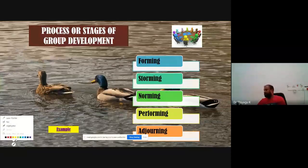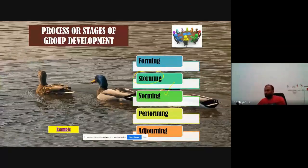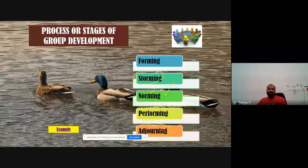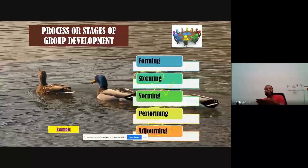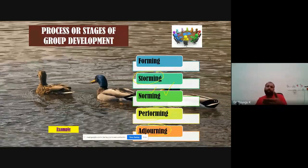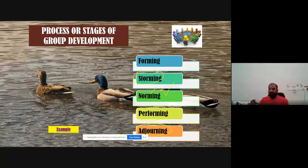In the norming stage, the storming issues reduce. Now you realize the exact nature of your work, what is assigned to you, what you are going to do — you fix your norms. Then finally you are performing to reach your target. Once all four semesters are over, the entire MBA batch will adjourn, because your work is over, you got the certificate. After finishing your MBA program, each one goes in different directions.